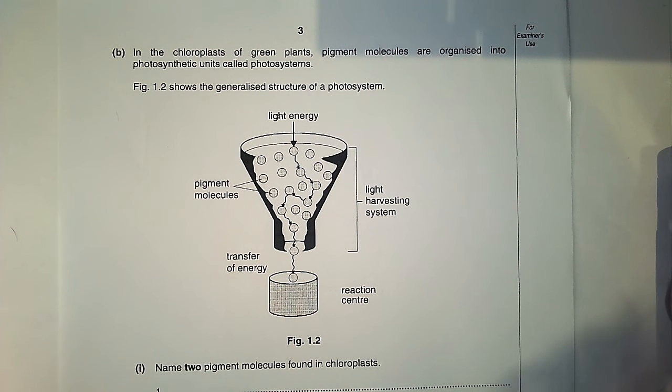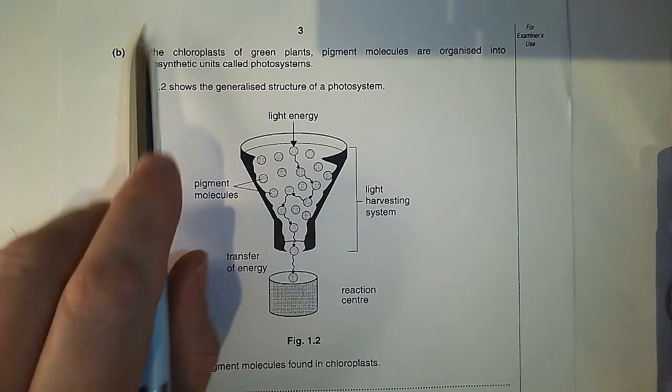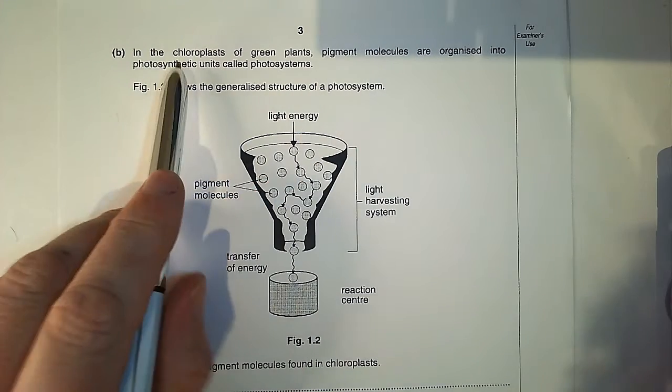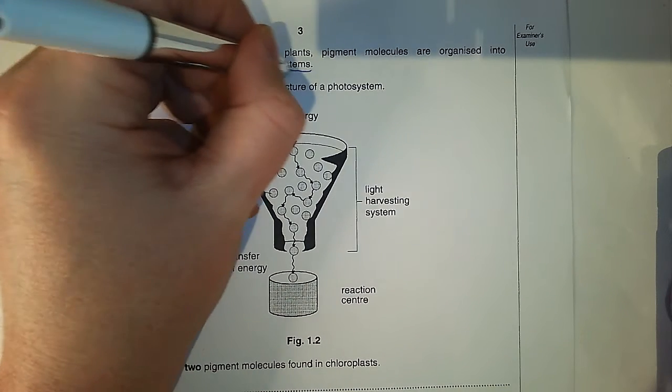This is an exam question about photosynthesis. It says in the chloroplasts of green plants, pigment molecules are organized into photosynthetic units called photosystems.